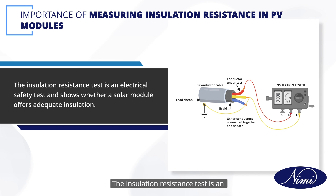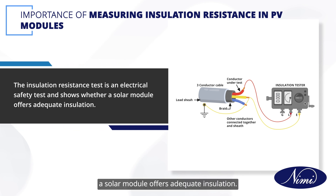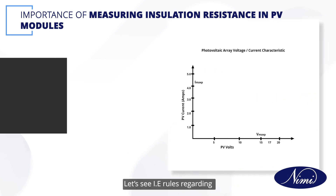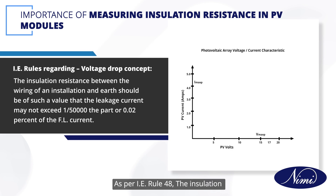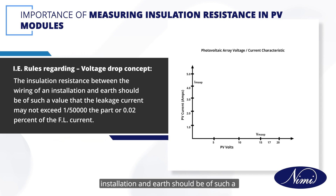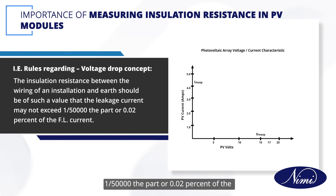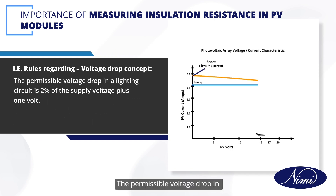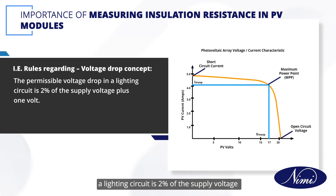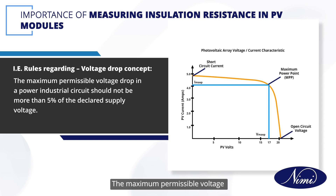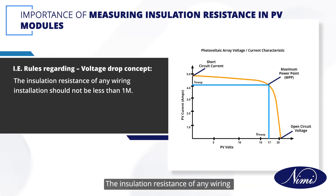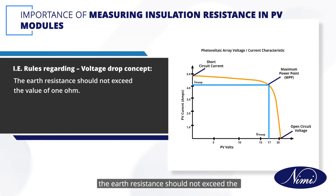The insulation resistance test is an electrical safety test and shows whether a solar module offers adequate insulation. As per IE Rule 48, the insulation resistance between the wiring of an installation and earth should be of such a value that the leakage current may not exceed 1/50,000 of the path, or 0.02% of the full load current. The permissible voltage drop in a lighting circuit is 2% of the supply voltage plus 1V. The maximum permissible voltage drop in a power industrial circuit should not be more than 5% of the declared supply voltage. The insulation resistance of any wiring installation should not be less than 1 megohm, and the earth resistance should not exceed 1 ohm.